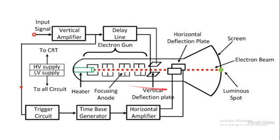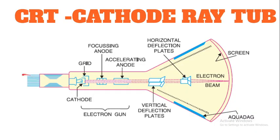I am going to show you the cathode ray tube. First, this is the heat tube. This is the cathode, this is the grid, this is the focusing anode, this is the pre-accelerating anode, this is the accelerating anode — together forming the electron gun. This is the vertical deflecting plates and horizontal deflecting plates. This is the screen. I will explain the properties and operation in this video.